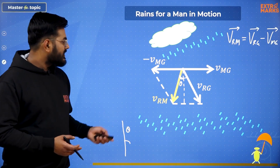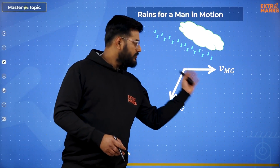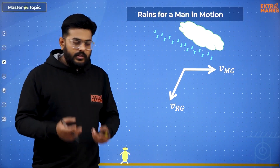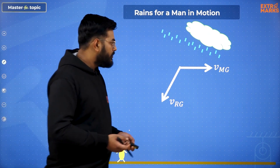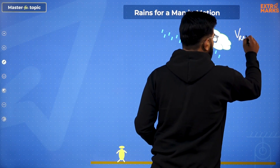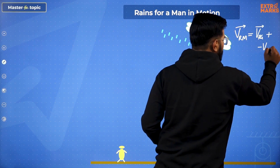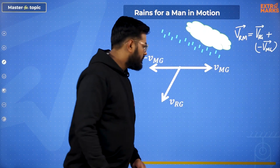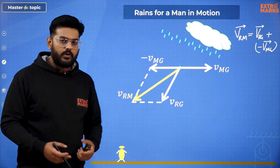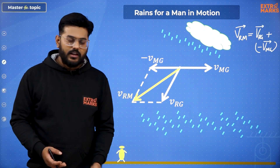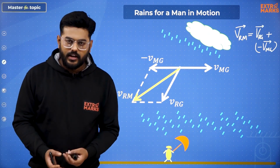Now let's take the case wherein the rains are falling in this direction. Earlier the rains were falling like that; now the rains are falling like that. So in this case, I suppose you people must be knowing more than me — the same thing will be done. We will just be hunting for velocity of rain with respect to man, and that is just the addition of velocity of rain with respect to ground plus minus of velocity of man with respect to ground. Using vector analysis and the parallelogram law of addition, you can finally arrive at velocity of rain with respect to man. This will be the direction in which rains will appear to the man, and the umbrella should be held in such a fashion to avoid getting drenched.